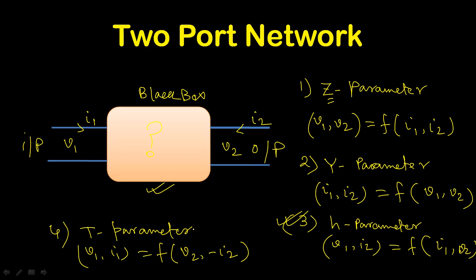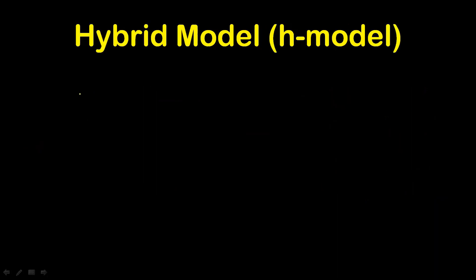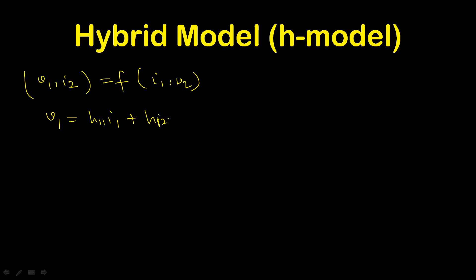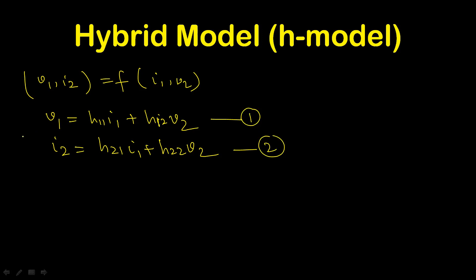If we write the equations in equation form for H parameters, the equations will be: V1 = H11·I1 + H12·V2, and I2 = H21·I1 + H22·V2. So V1 and I2 are functions of I1 and V2, and the four H parameters are H11, H12, H21, and H22. These are the two H equations — equation 1 and equation 2 — related to the hybrid model.